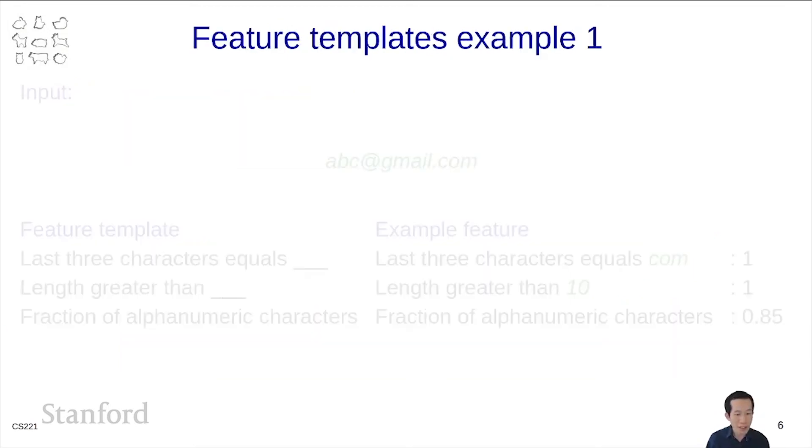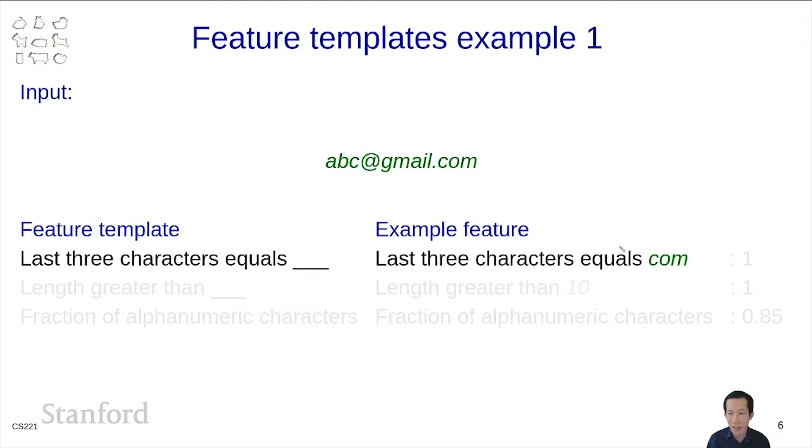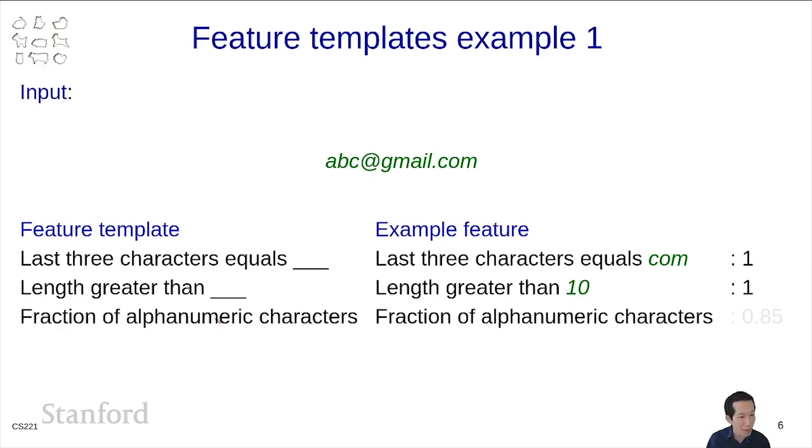To continue this example, the input is abc at gmail.com. We define this feature template, which can be instantiated by substituting something like .com. We can also define this other feature template length greater than blank. And we can plug in 1, 2, 3, 4, 5, 6, 7, 8, 9, 10, and so on. Some feature templates don't have a blank. That's okay because that just corresponds to specifying one single feature. And that has a particular value.